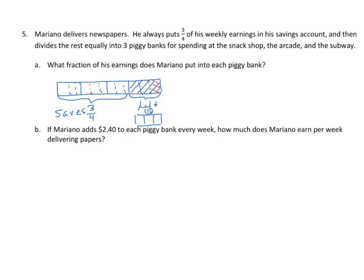Let's see what we have left. We have one, two, three, four, five, six, seven, eight, nine, ten, eleven, twelve. One out of twelve. So, one-twelfth goes into each piggy bank.